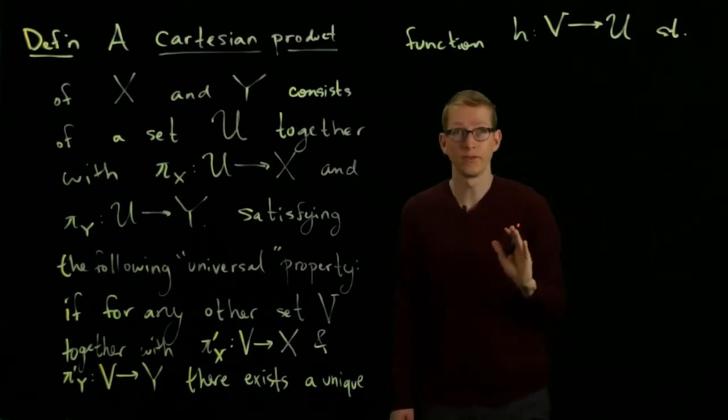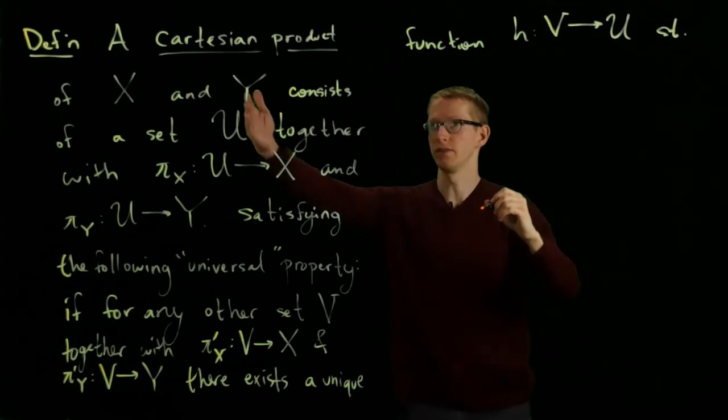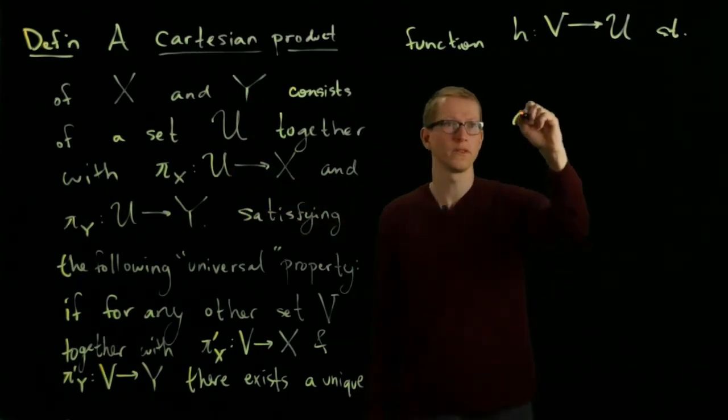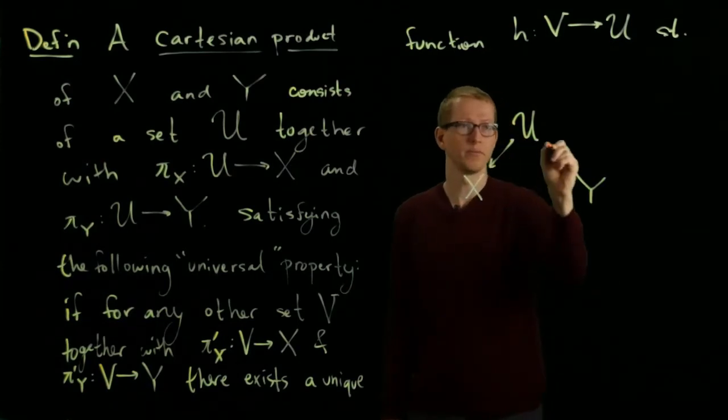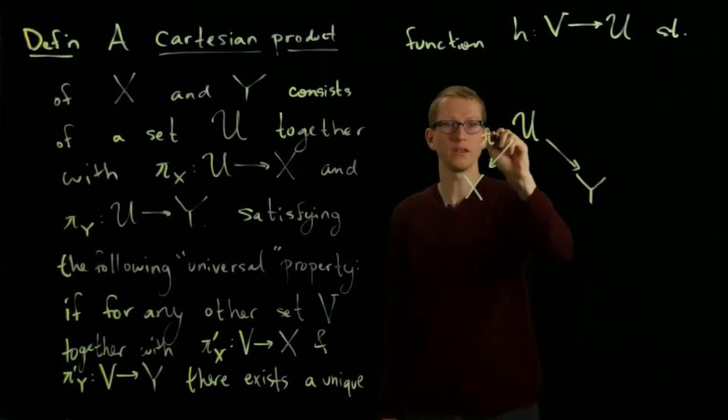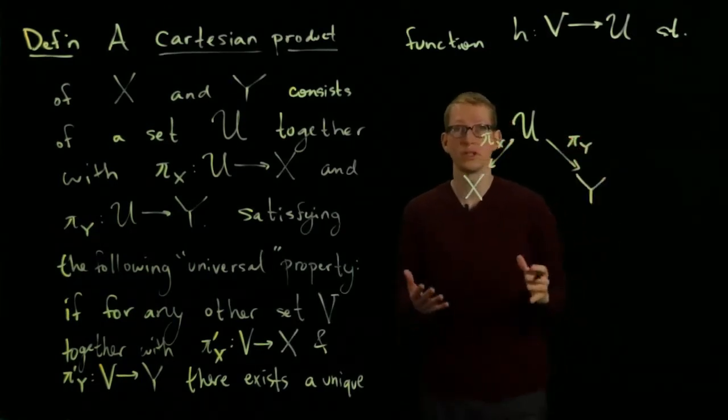Here let me draw this data. We have U, we have X, we have Y, and we have these maps. We think of these as projection maps onto the two different factors.